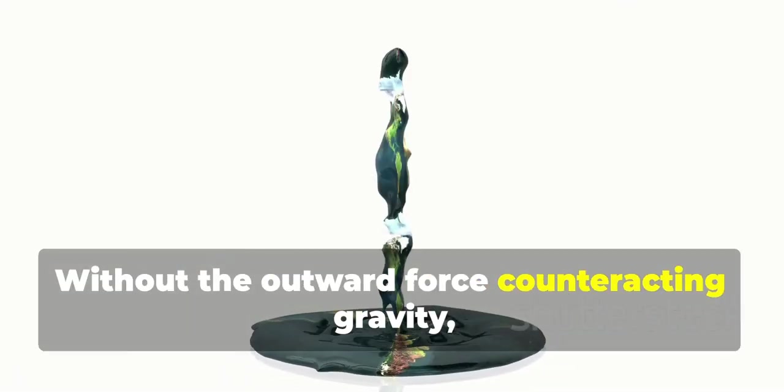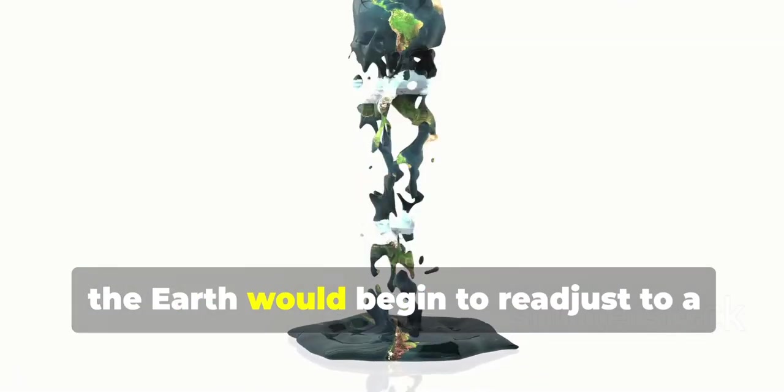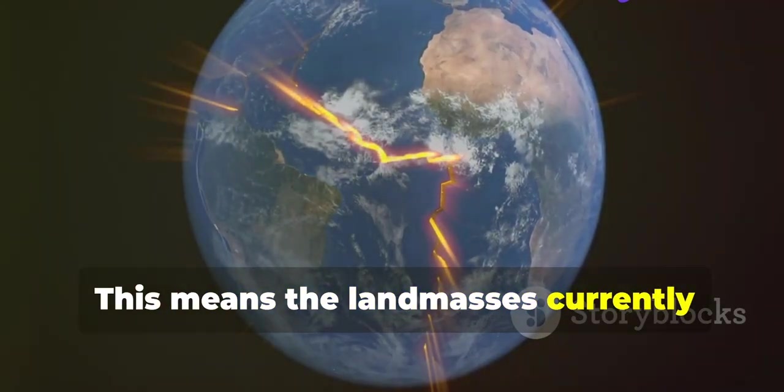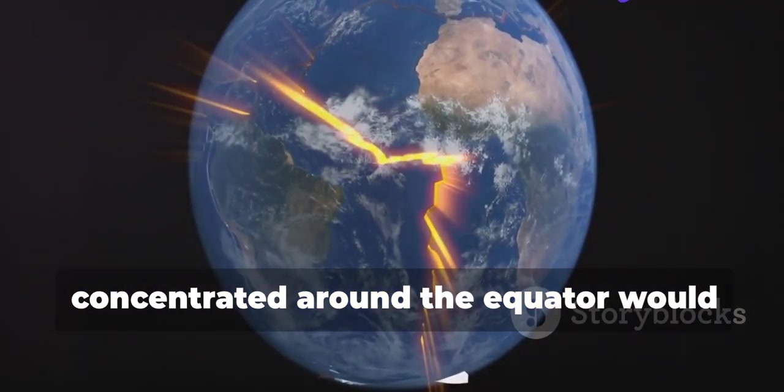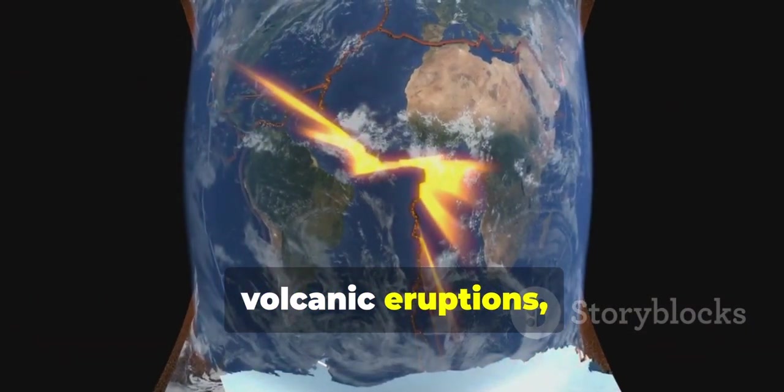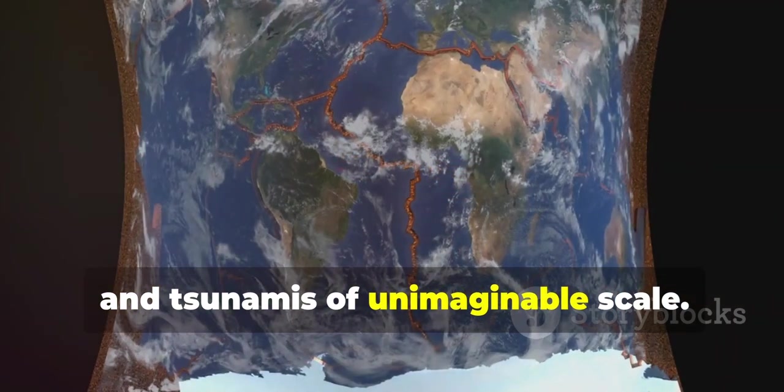Without the outward force counteracting gravity, the Earth would begin to readjust to a more perfectly spherical shape. This means the landmasses currently concentrated around the equator would experience a massive shift, causing earthquakes, volcanic eruptions, and tsunamis of unimaginable scale.